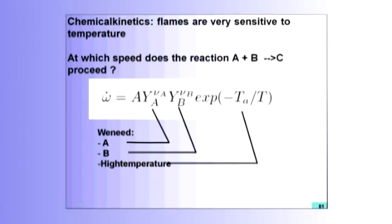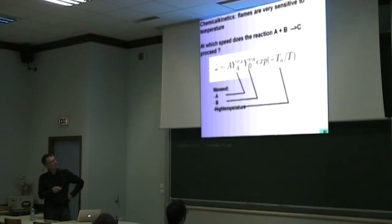And then what he found is that he had to add a term here, which is exponential minus TA over T. TA is a constant. This is what we call the activation temperature. And T is the local temperature.